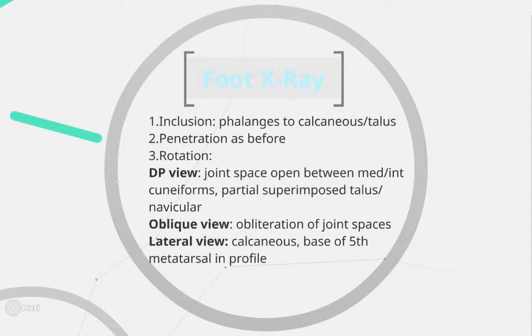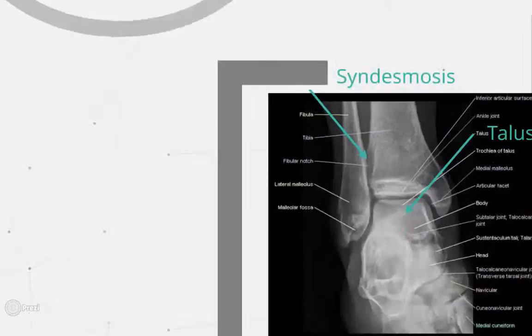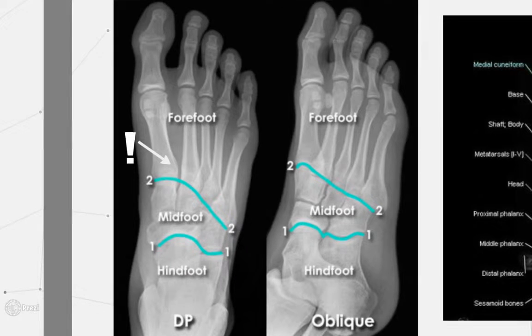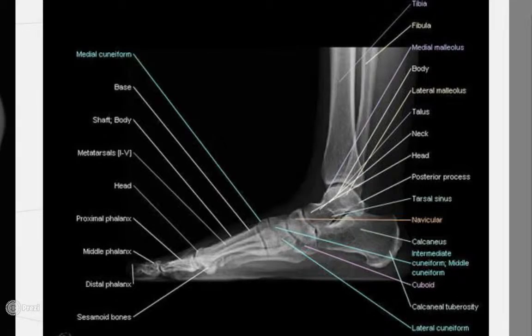On any foot x-ray, ensure that you can see from the calcaneus and talus all the way through to the phalanges. On DP view, there is an open joint space between the medial and intermediate cuneiforms. This is obliterated on oblique view, which is taken at an angle of 40 degrees. On that view, ensure that the calcaneus and fifth metatarsals are seen in profile.